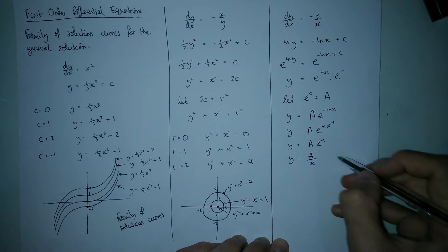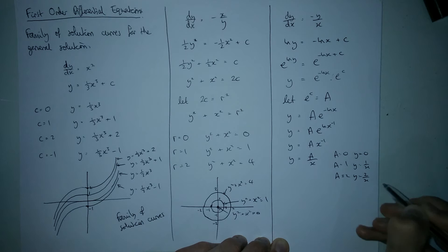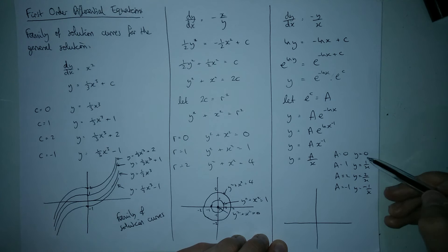This time it's the A that we can vary. So we could say let A be zero and we've got y equals zero. Let A be one, we've got y equals one over x. Let A be two, we've got y equals two over x. Let A be minus one, we've got y equals minus one over x. Then we sketch those curves down here.